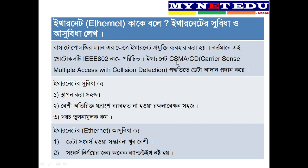This is called Carrier Sense Multiple Access with Collision Detection, or CSMA/CD. It is important to understand how this works. We can detect the data and detect the nodes in the bandwidth. So we can use Ethernet based on this method.